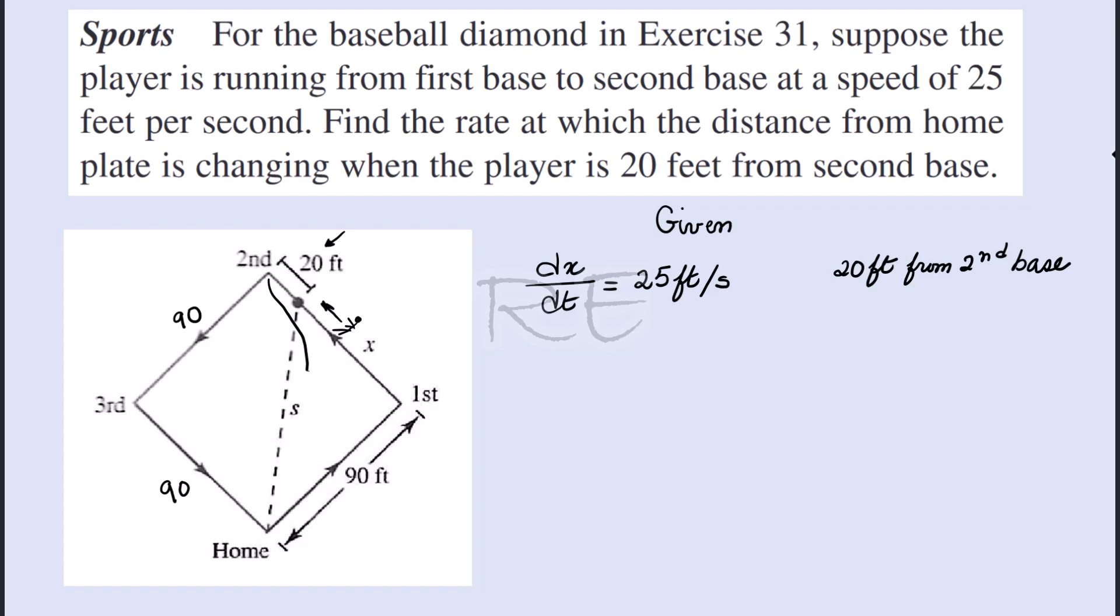To find the distance covered by the player, we will subtract 20 from 90 feet. x is equal to 90 feet minus 20, which is 70 feet.